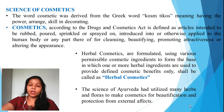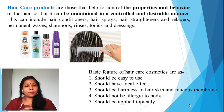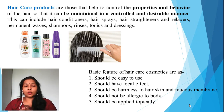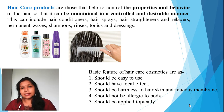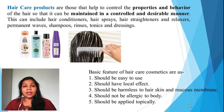Talking about hair care products — they are mainly meant to maintain your hair, manage it, make it look better, and maintain the properties and behavior of the hair. This includes a wide range of products such as hair conditioners, hair sprays, hair straighteners, hair relaxers, shampoos, rinses, tonics, and dressings. The main aim is to give you clean hair, better hair, and to maintain the hygiene of the hair while also promoting its attractiveness.